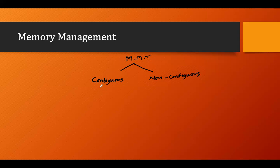Contiguous memory allocation means we allocate continuous memory for the program or process to be stored. In contiguous memory allocation, we have two types of partitions in the memory.